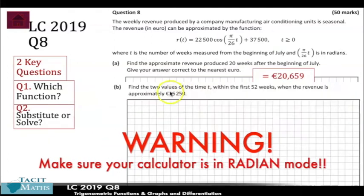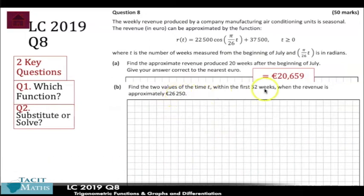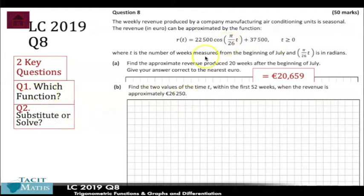Now this next question is slightly tricky. We've defined two values of time t, and we're looking for t when the revenue is approximately 26,250. So we're still working with the original function, but this time we're setting it equal to 26,250 and solving.